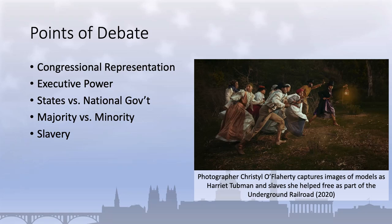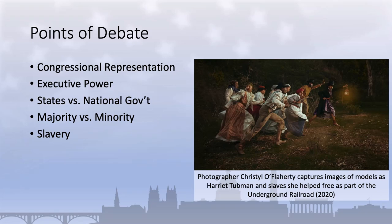And some of the founders called out this hypocrisy. James Madison, for example, attacked the system of slavery at the Constitutional Convention itself, saying, "We have seen the mere distinction of color made, in the most enlightened period of time, a ground of the most oppressive dominion ever existed by man over man." Governor Morris called slavery a nefarious institution. And James Madison wrote, "Every measure of prudence, therefore, ought to be assumed for the eventual and total expiration of slavery from the United States. I have, through my whole life, held the practice of slavery in abhorrence."